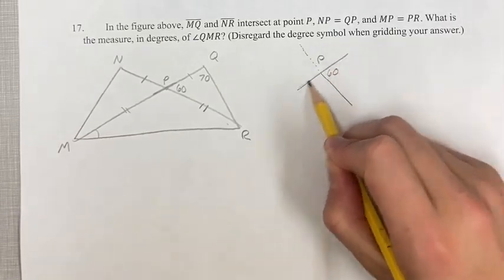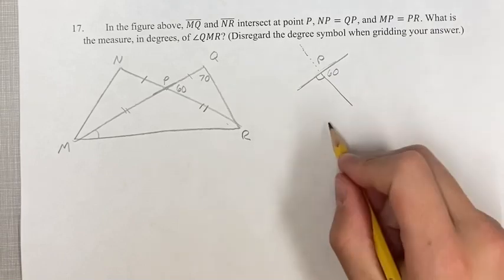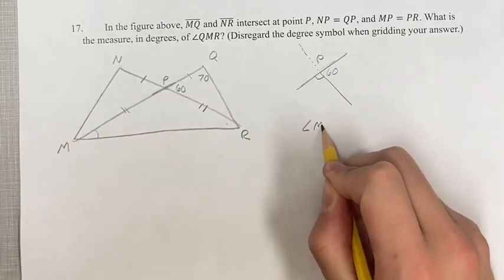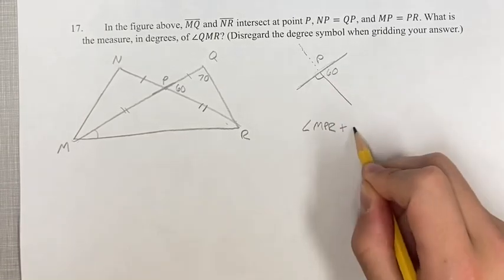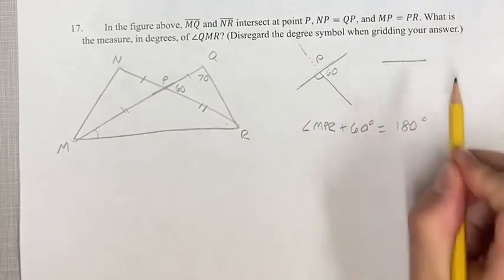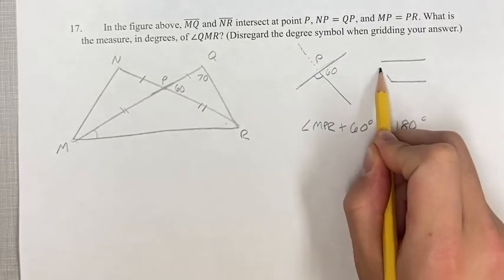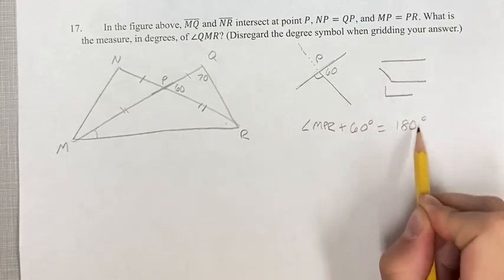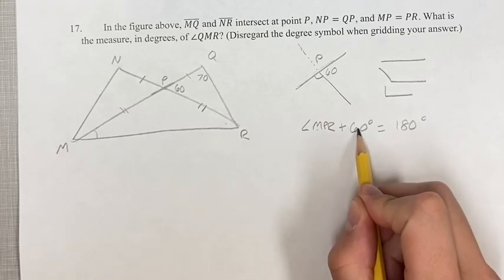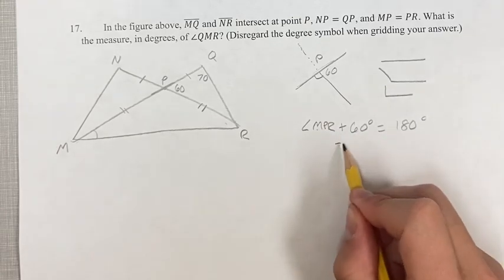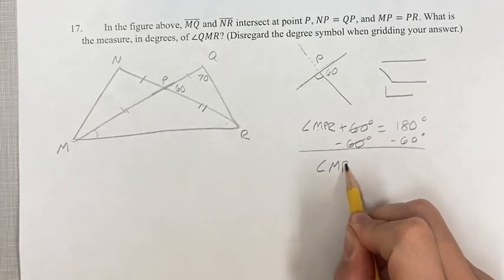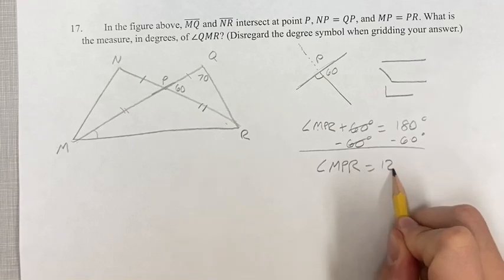Since they form a straight line, this angle plus 60 degrees, which is angle MPR plus 60 degrees, has to equal 180 degrees because they form the line. A line is 180 degrees. The straight line is 180 degrees, so angle MPR plus 60 degrees equals 180 degrees. Subtracting 60 degrees from both sides, these cancel out, and you get angle MPR equals 180 minus 60, which is 120.